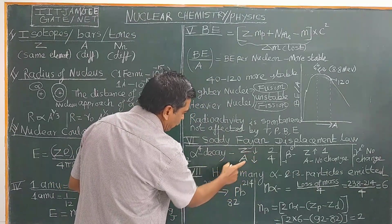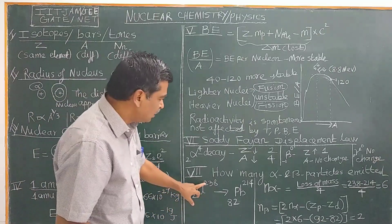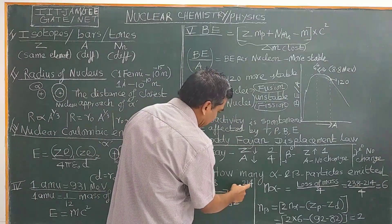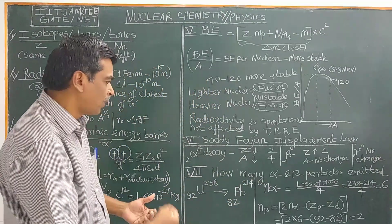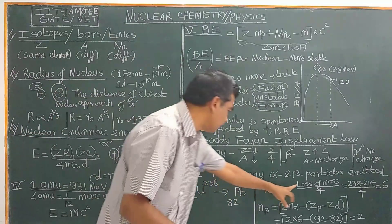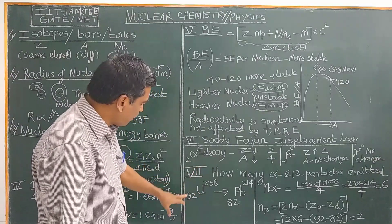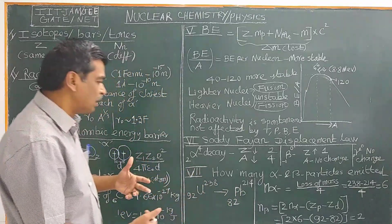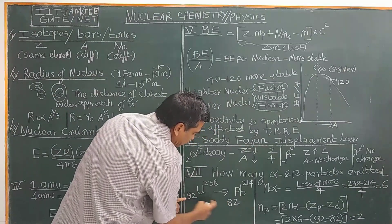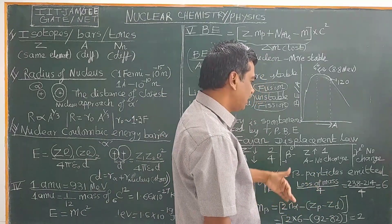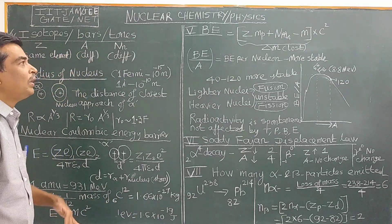For beta particles, you can use the formula: N_beta = 2 × N_alpha − (Z_parent − Z_daughter). Alternatively, reason it out: 6 alpha particles decrease the atomic number by 12, but the actual decrease is only 10 (from 92 to 82). Therefore, 2 beta particles are emitted to compensate. You can use either the formula or logical reasoning to calculate how many alpha and beta particles are emitted. We will continue and complete radioactivity.